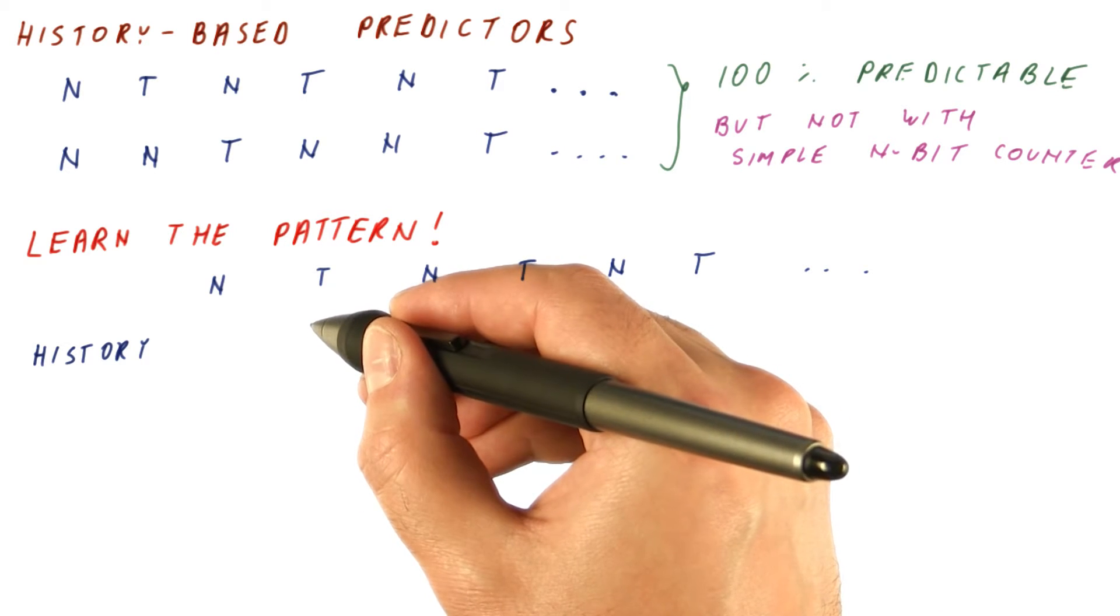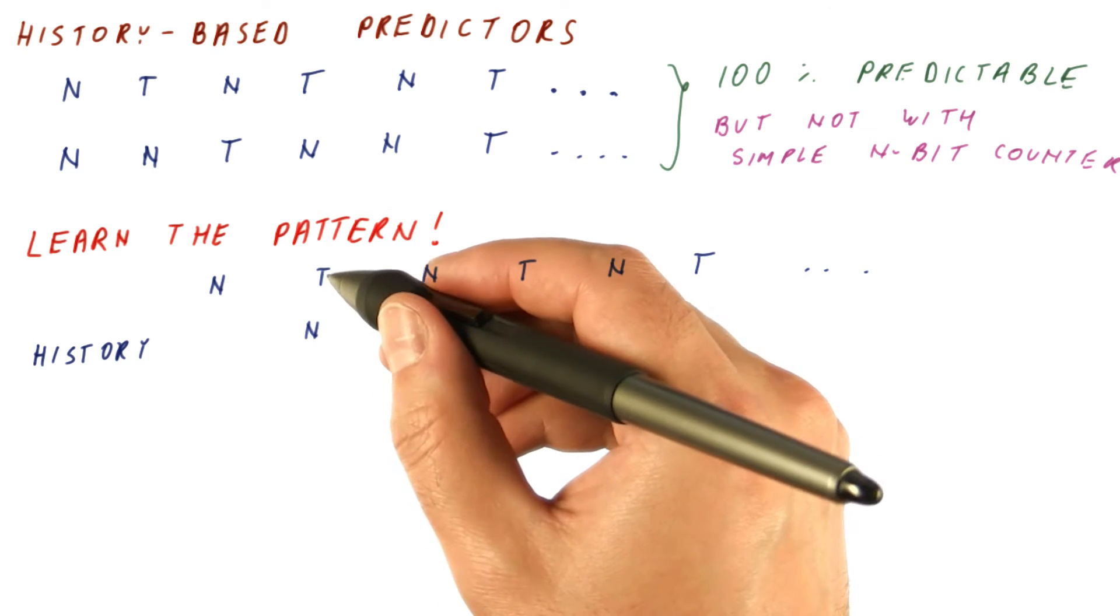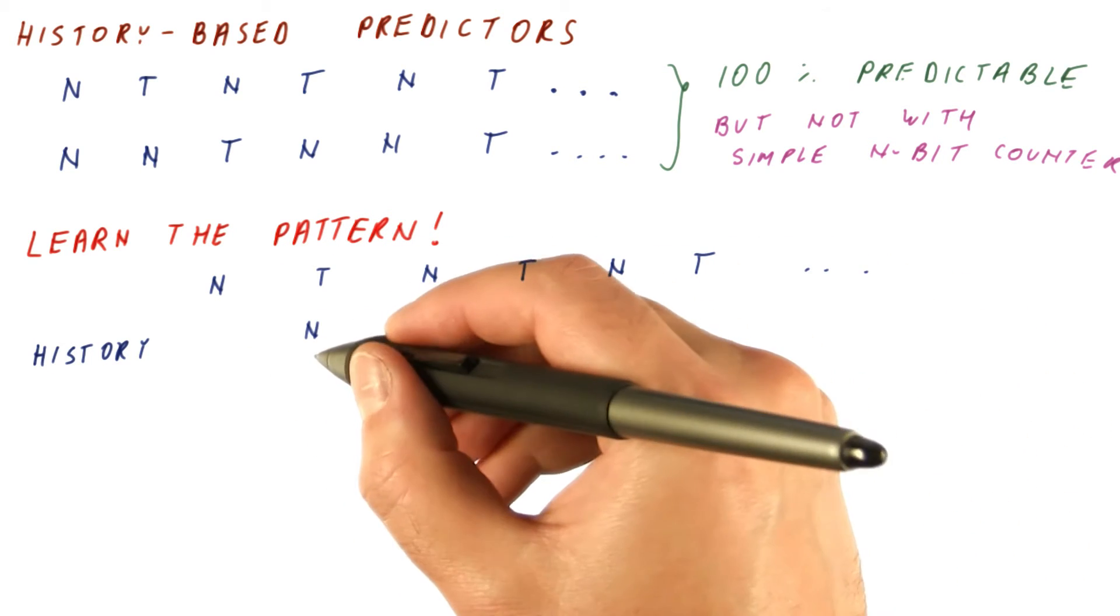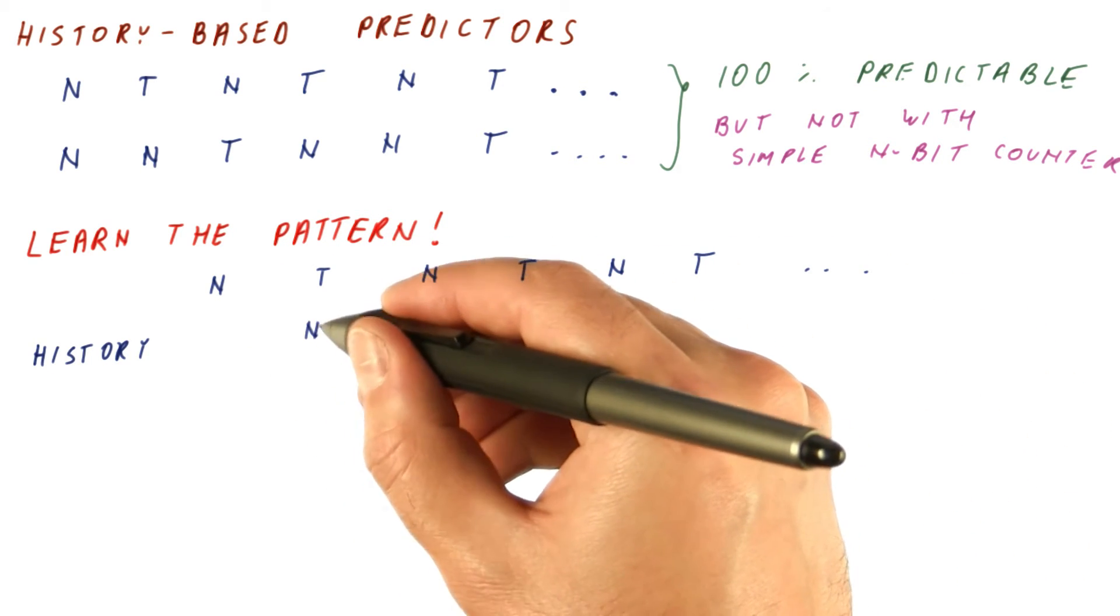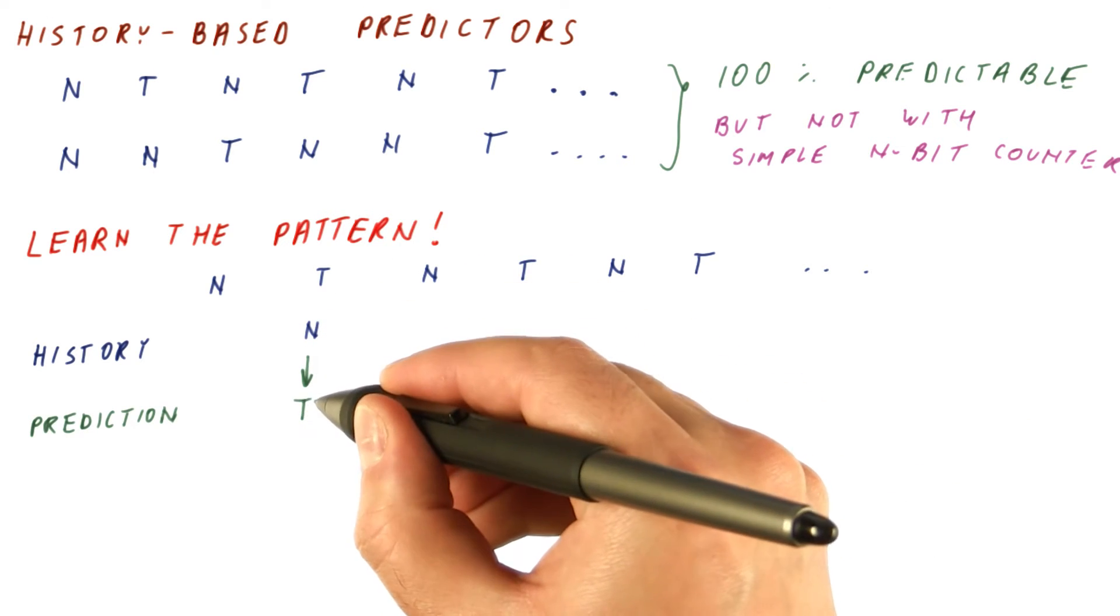What we know is that the previous outcome was not taken. And if we know what the pattern is, then we know that when the branch has been not taken previously, our prediction should be taken.